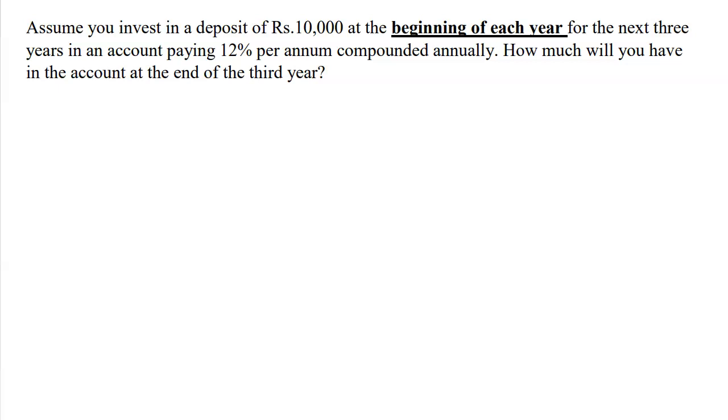Assume you invest in a deposit of rupees 10,000 at the beginning of each year for the next three years in an account paying 12% per annum compounded annually. How much will you have in the account at the end of the third year?